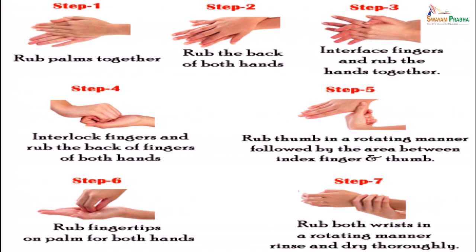The procedure for hand hygiene: first rub your palms together, then rub the back of both hands, interlace fingers and rub hands together, interlock fingers and rub the back of fingers of both hands, rub thumb in a rotating manner followed by the area between the index finger and thumb, rub fingertips on the palm for both hands, rub both wrists in a rotating manner, and then finally rinse.